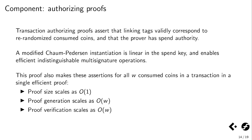There is a particular kind of proof we can call an authorizing proof. It asserts that the linking tags presented publicly in the transaction validly correspond to whichever re-randomized hidden consumed coins are involved, and that the prover actually has spend authority by possessing the spend key. In Spark, we use a modified Chaum-Pedersen instantiation, which happens to be linear in the spend key — important because it enables very efficient multi-signature operations that are indistinguishable from other transactions. We can also compress this down using a single constant-size proof for all consumed coins in a transaction: if the transaction consumes W coins, proof size scales as O(1) and generation and verification scale as O(W). Even though the consumed coin ambiguity set size might be very large, W is typically very small.